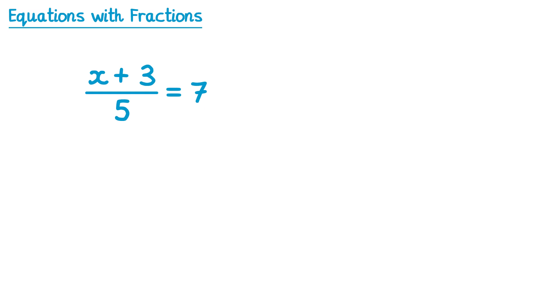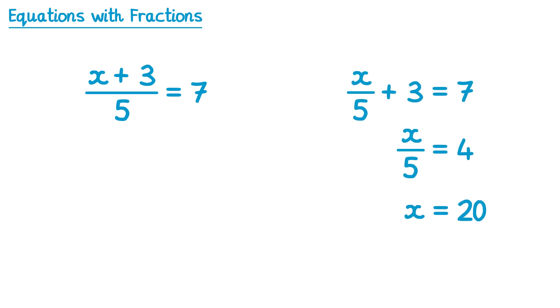Now let's try another type. This question looks very similar to one we solved a moment ago — both have a plus 3, both are divided by 5, and the right hand side is 7 for both. But the structure is slightly different: in this new equation the fraction line covers both the x and the plus 3, whereas in the original one the fraction line just covers x and then we add 3 afterwards.